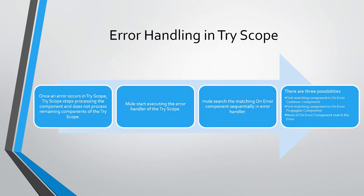At runtime, once an error occurs in Try Scope, Try Scope stops processing the current component and does not process the remaining components of the Try Scope. Mule then starts executing the error handler of the Try Scope, searching for the matching on-error component in sequence.